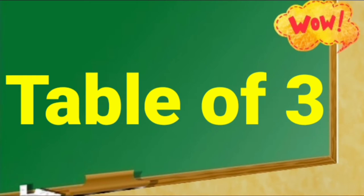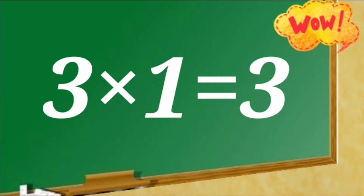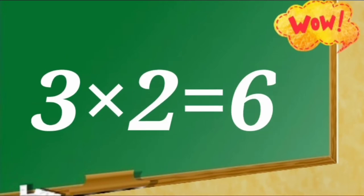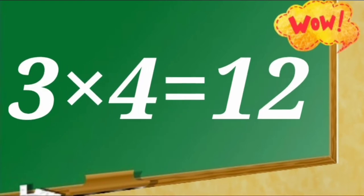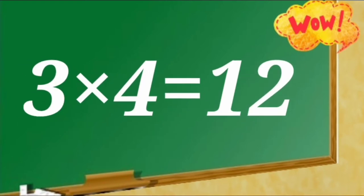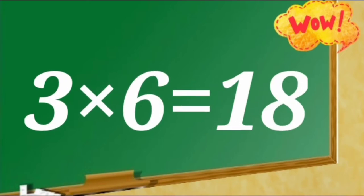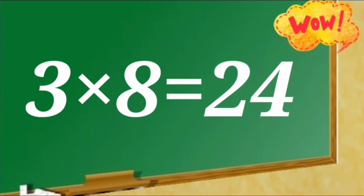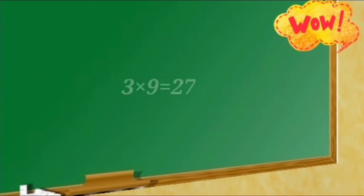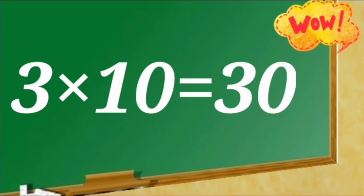Table of 3. 3 ones are 3, 3 twos are 6, 3 threes are 9, 3 fours are 12, 3 fives are 15, 3 sixes are 18, 3 sevens are 21, 3 eights are 24, 3 nines are 27, 3 tens are 30.